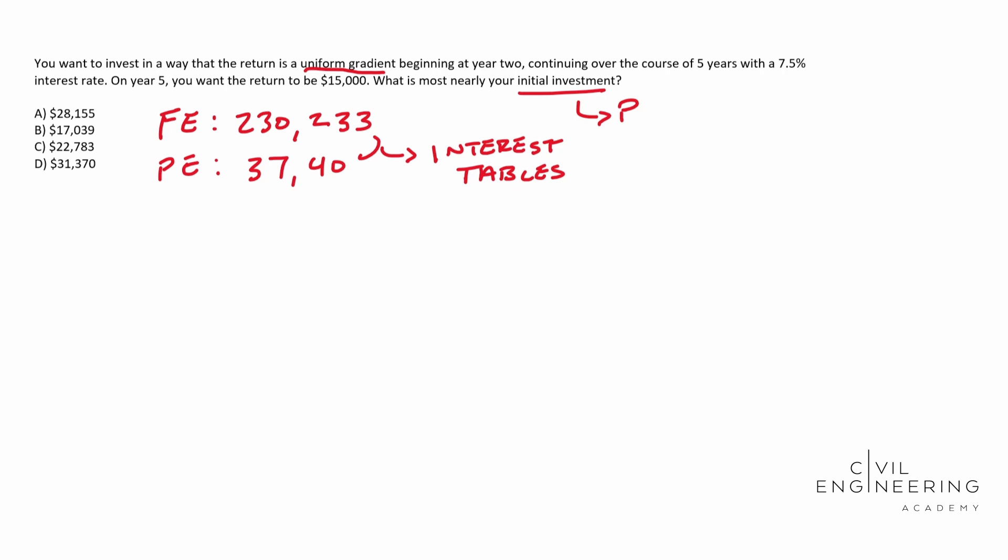So let's go ahead and draw this guy out. You may remember this from class. We have sort of a number line almost. We have zero and then we have year five. And then at year five, it says we have $15,000 or you want it to be $15,000. So we're going to say, yes, it is $15,000. And then we want to know our present worth at year zero. So how much do we need to put in to get that $15,000?